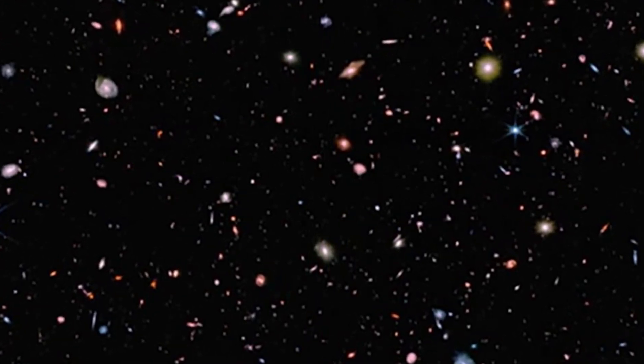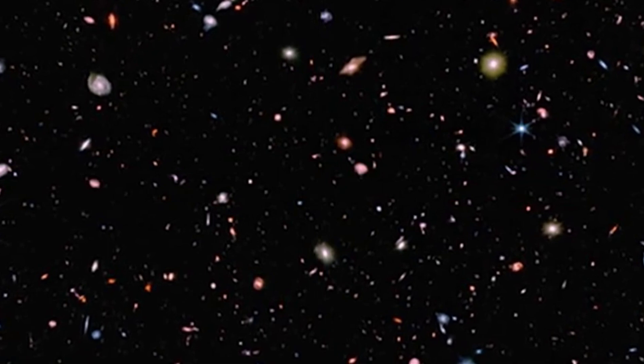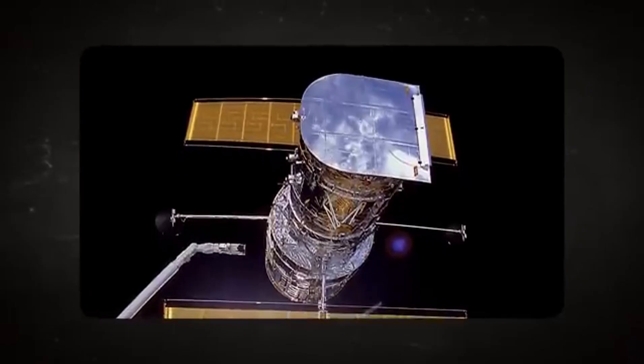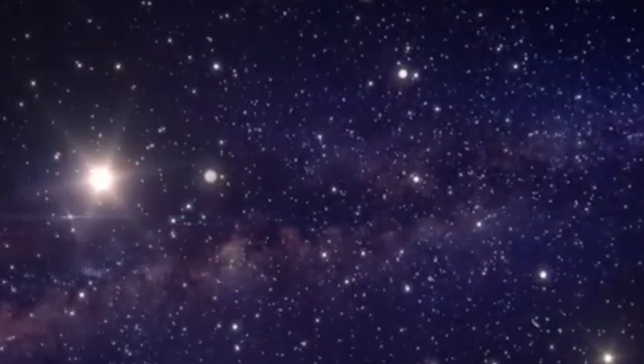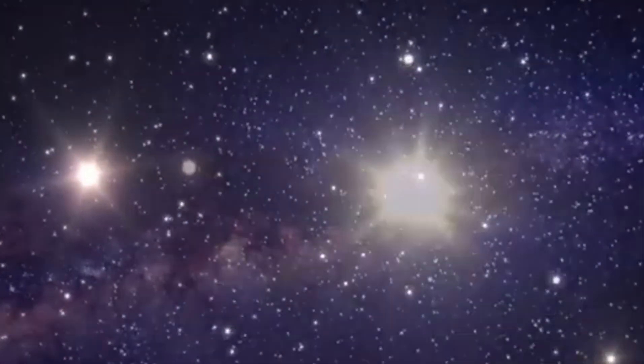Featured an image known as Webb's first deep field. This spectacular snapshot unveils a massive cluster of galaxies called SMACS-0723. What's captivating is how the galaxy cluster amplifies and bends the light from more distant galaxies behind it, creating an awe-inspiring cosmic magnifying glass effect. This results in Webb capturing the most detailed view of our universe's early days.